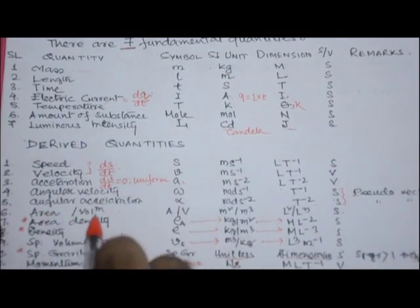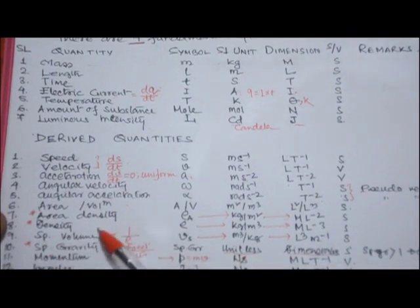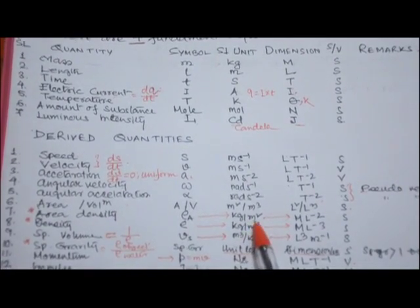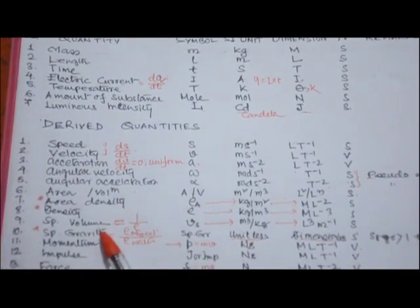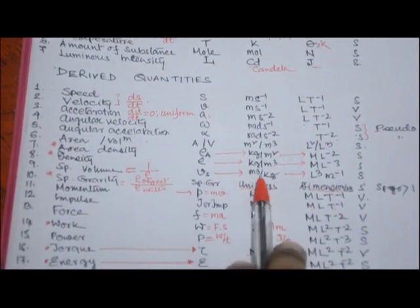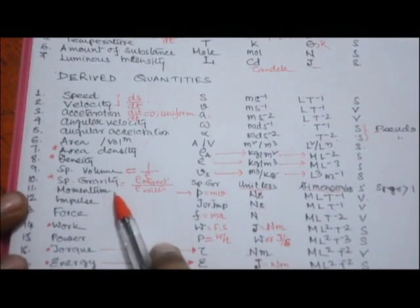Area is meter square (dimension L²) and volume is meter cube (dimension L³). Area density is mass per unit area — kg per meter square, dimension ML⁻². Density is mass per unit volume — kg per meter cube, dimension ML⁻³. Specific volume is the inverse of density — volume per unit mass — meter cube per kg, dimension L³M⁻¹.